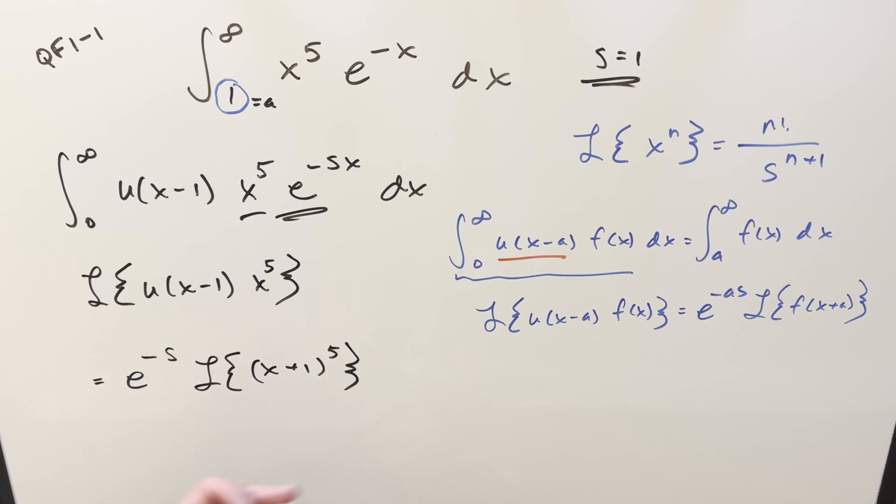So before I could take the Laplace transform, I really need to just expand this out using Pascal's triangle or whatever. But then now if we split this up, we have six easy Laplace transformers we can do just using this formula. It's just a big polynomial.